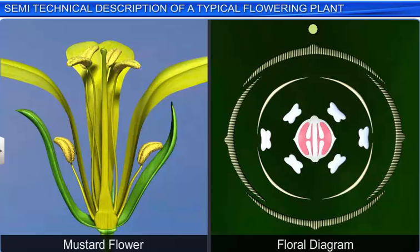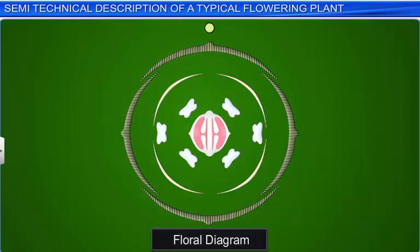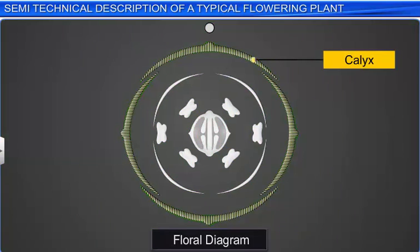The outermost whorl in the floral diagram is the calyx, followed by the corolla, androecium, and gynoecium.